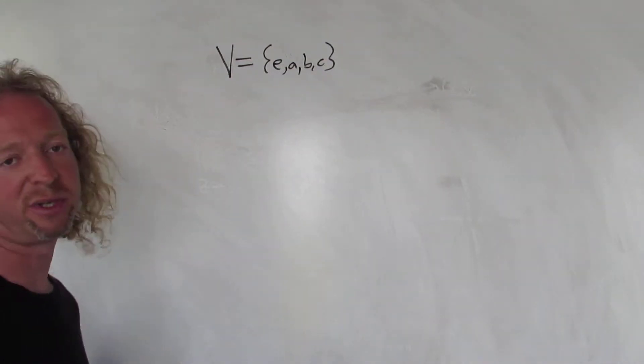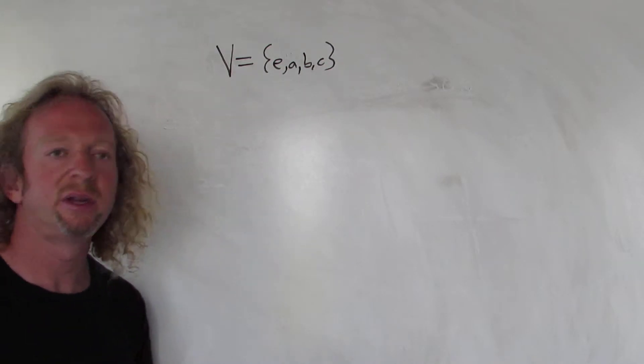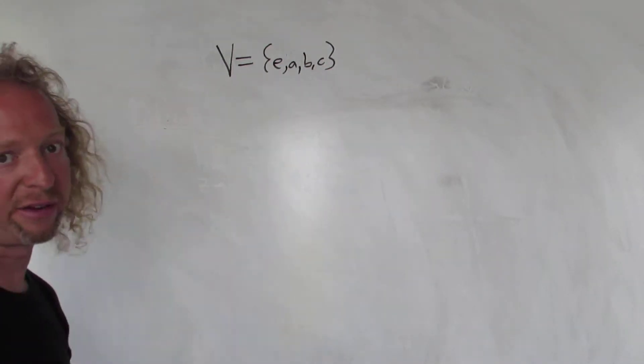Hi YouTube! In this video I just want to do a really simple example of cosets. So this here is called the Klein 4 group.